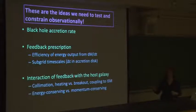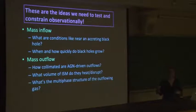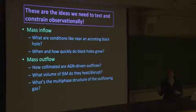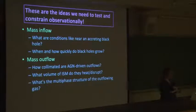I've listed a few of these prescription components from a physical model standpoint, but I'm going to reframe them as an observer standpoint into questions that I think are answerable as observers. The first set are questions about mass inflow. We want to understand what conditions are like near an accreting black hole so we can understand how gas moves from giant scales to small scales to the black hole scale. And we want to understand how quickly these black holes grow and when in galaxy evolution it's important.